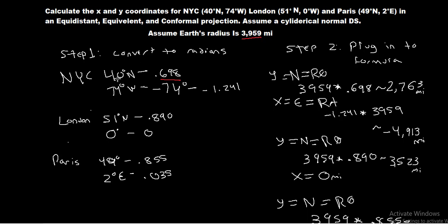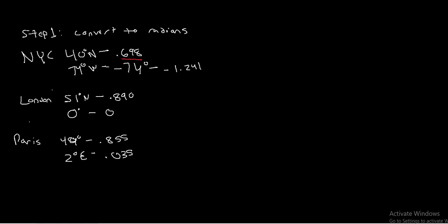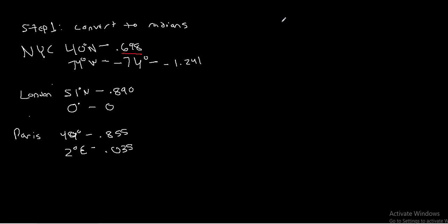Let's go ahead and think about what we've done in the past. We've already done these three example cities—New York, London, and Paris—for the equidistant and equivalent projections. Now we're going to do them one final time for the conformal projections. We're going to skip step one, where we converted from degrees to radians. If this seems confusing to you, go back and re-watch the equidistant video. That's where we generated these values. Otherwise, we're going to move on to step two, where I have already copied the values from step one.